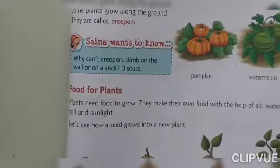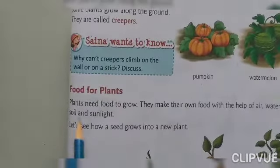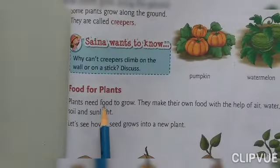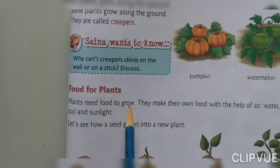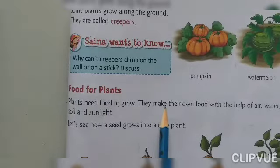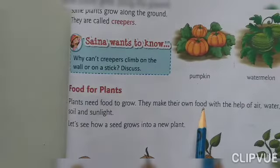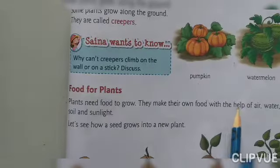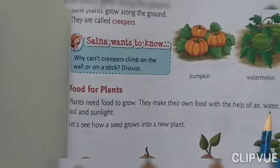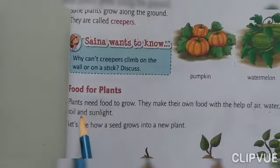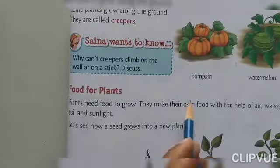Now, food for plants. Plants need food to grow. They make their own food with the help of air, water, soil, and sunlight.